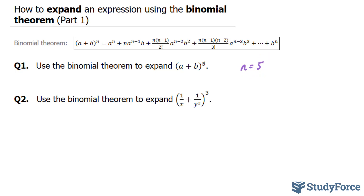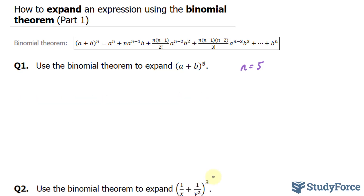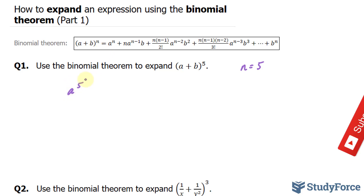Now prepare to have a very long expression, so make sure that you have enough space. Now that I've created more room, I'll start off by applying my a, b, and n to the formula. Let's start with the first term: we have a to the power of n, so we have a to the power of five.